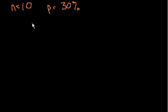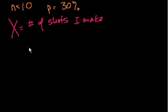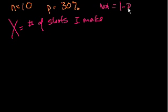Let's define a random variable x equal to the number of baskets I make. This is a little more interesting than the flipping a coin example, because in the coin example heads or tails both had equal probability. Here, making a shot is less likely than not making a shot. The probability of not making a shot is 1 minus 0.3, which equals 70%.